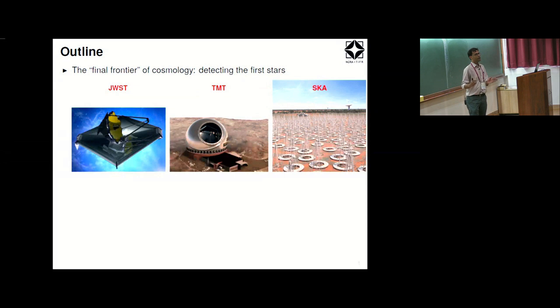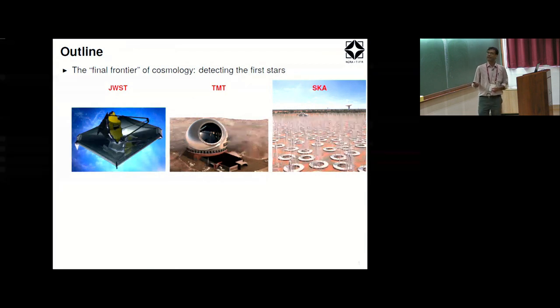There is a redshift range in between, maybe redshifts from 6 or 8 or 10 to about 1100 which is still to be probed observationally directly, and that's something one is hoping to do using various experiments. That's why it's called final frontier because that's what will close the story of cosmology.